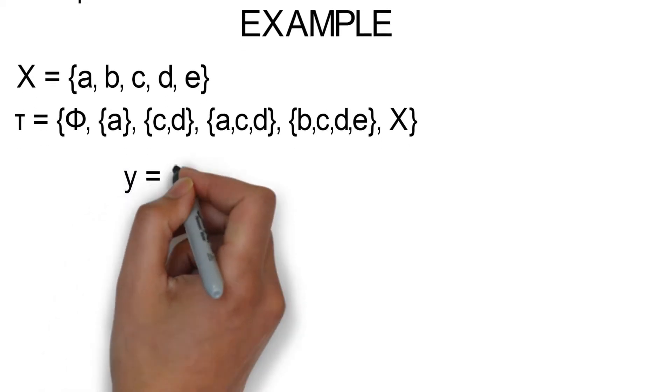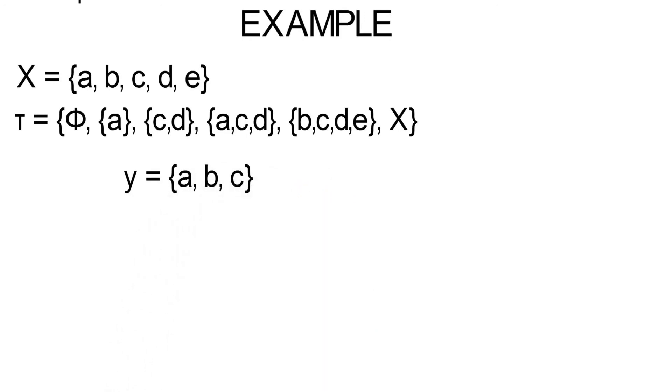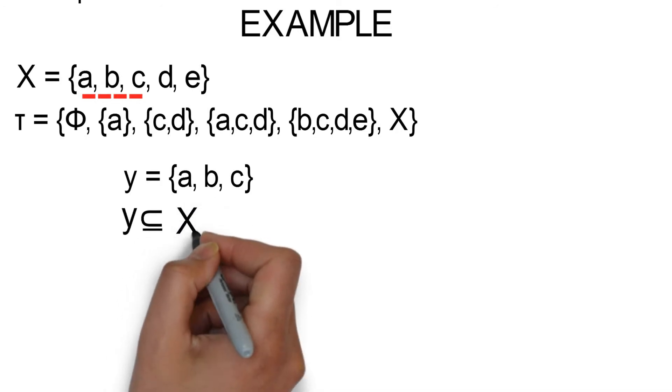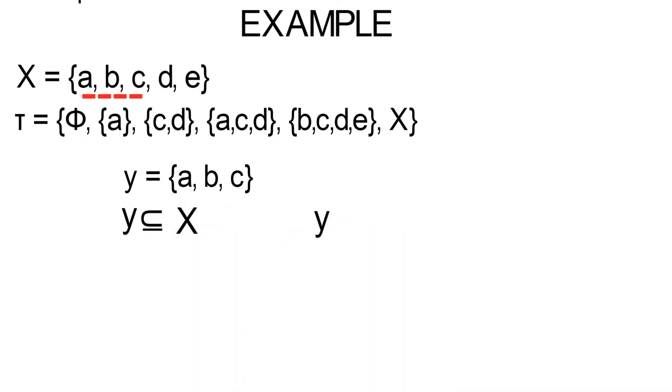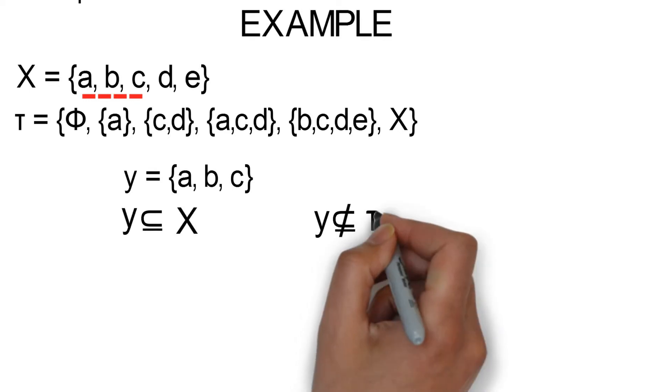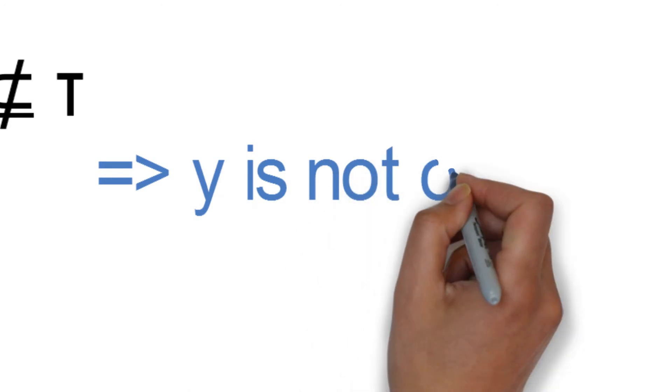So if we take any random subset of X, say y = {a, b, c}, we can see that it is a subset of X. But we can also see that y is not a member of τ. So this implies that y is not open.